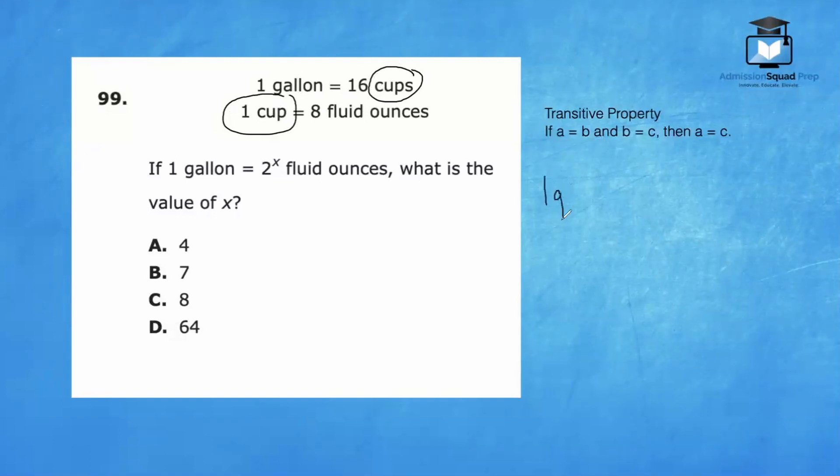We have one gallon equals 16 cups. Then our next step is to convert one cup into 16 cups. So we can multiply one cup times 16 and eight times 16 as well. One cup times 16 is 16 cups. And let's calculate 16 times eight. Eight times six is 48. Put the eight, carry the four. Eight times one is eight. Eight plus four is 12.